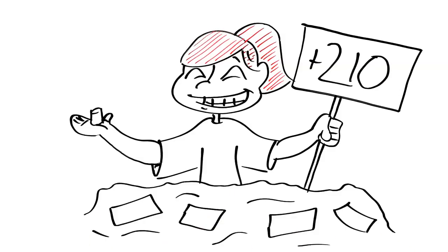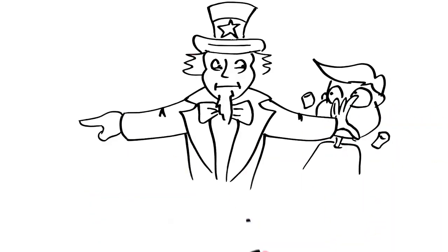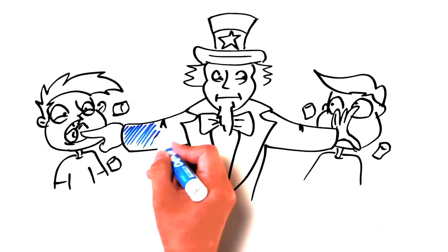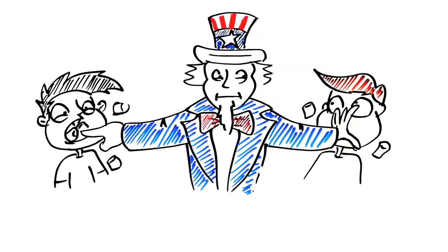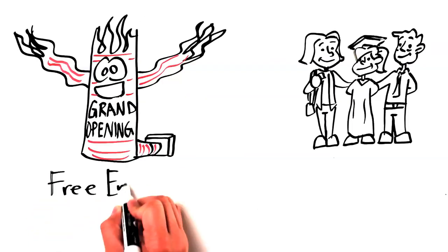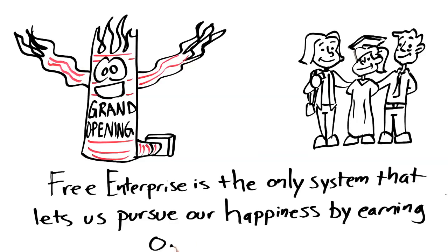They also made a lot more money and were less likely to be involved in crime and drugs. Teaching young people to defer their gratification, to earn their success, is clearly in our national interest. But expanding the welfare state is basically just shoving marshmallows into our mouths. Free enterprise is the only system that allows us to pursue our happiness by earning our success. And that's the right thing to do, whether we get rich or not.